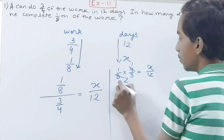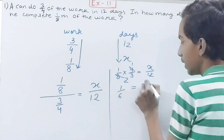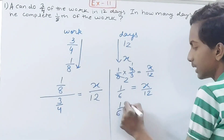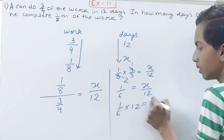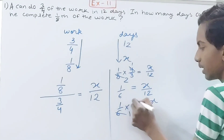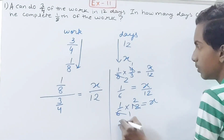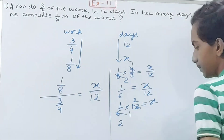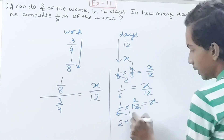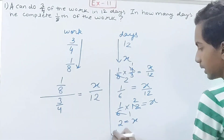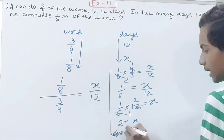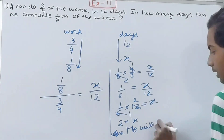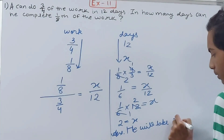Solving: one-eighth times four-thirds equals x over 12, which gives one-sixth equals x over 12. So x equals one-sixth times 12, which equals 2. Therefore x equals 2 days.